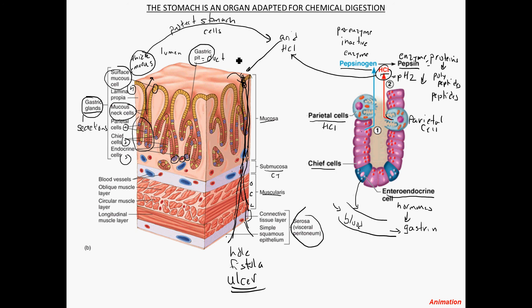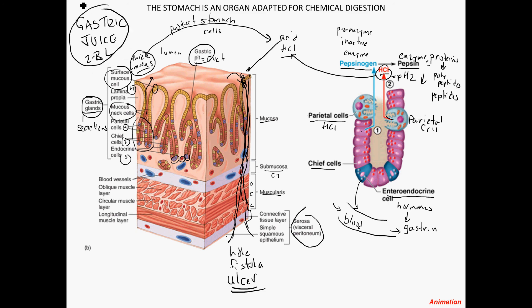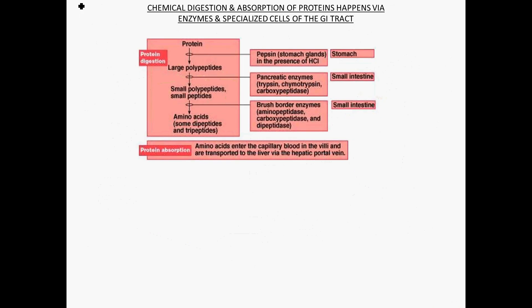All of this together — the mucus, the hydrochloric acid, the pepsinogen — is referred to as gastric juice. On any given normal day, about two to three liters of gastric juice is produced. Now back to protein digestion, which is what we see in the first part of this diagram we'll be studying throughout this course.